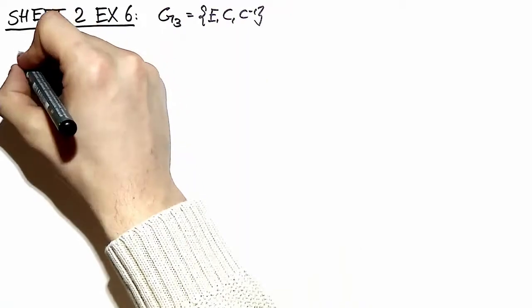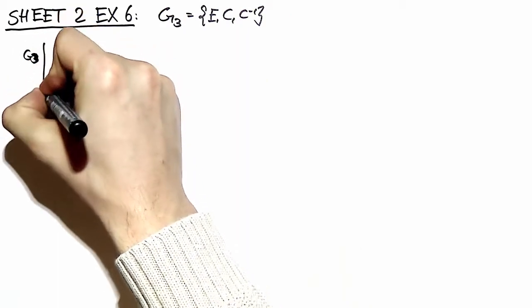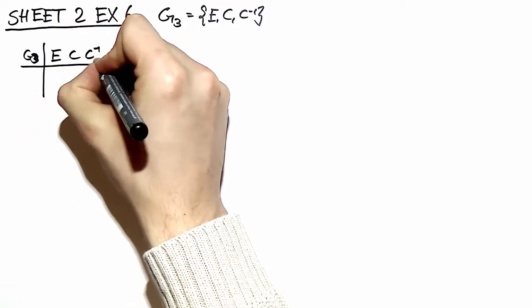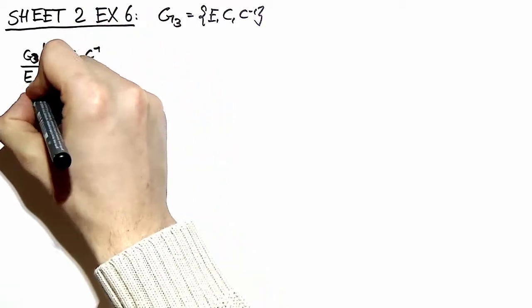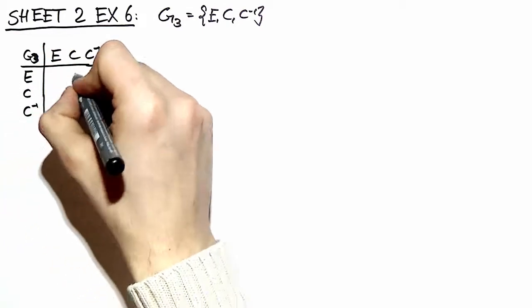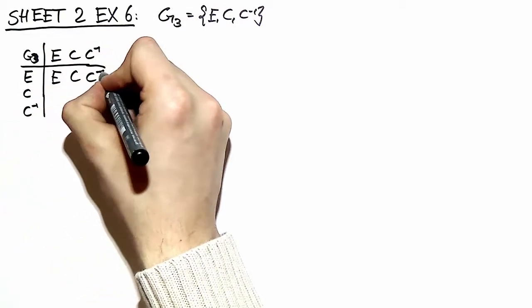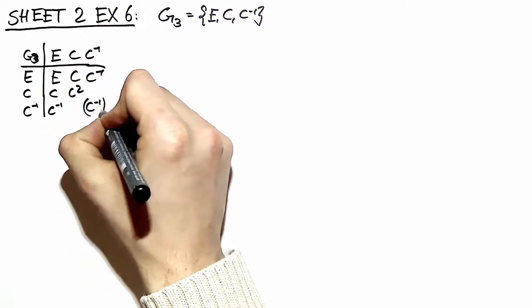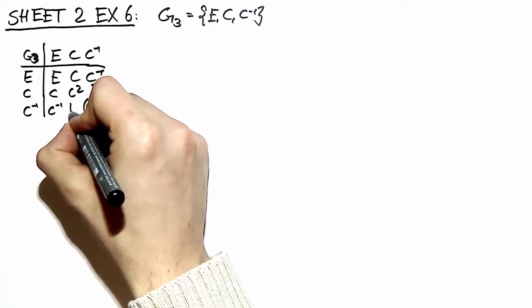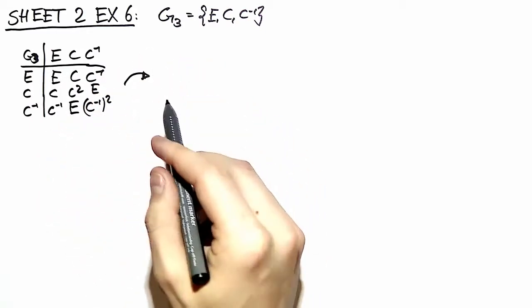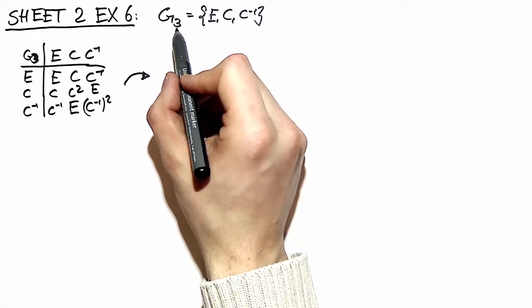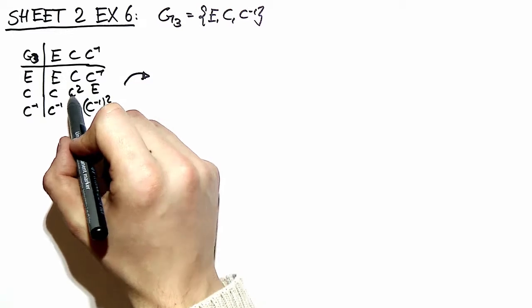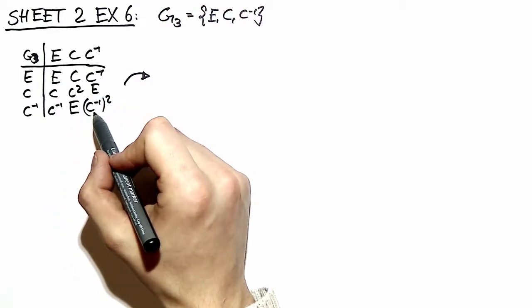First of all, if we don't know anything about this group, it's a good approach to write down the character table of this group and see if we can recognize anything special about it. The first row and first column are given; then we have c squared here, c to the minus one squared here, and identity and identity. In order for G3 to be a group, c squared must be equal to c to the minus one, and c to the minus one squared must be equal to c.